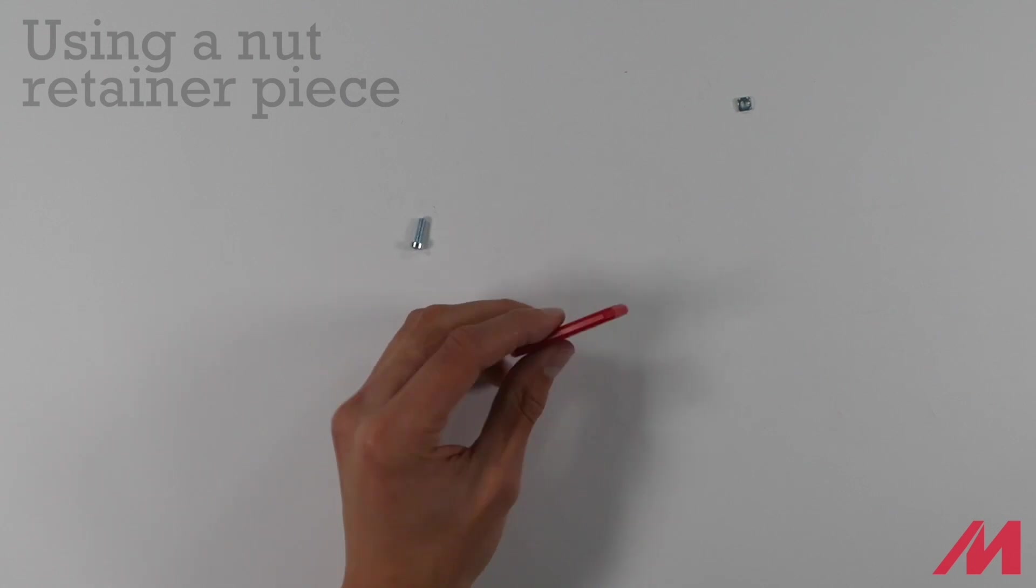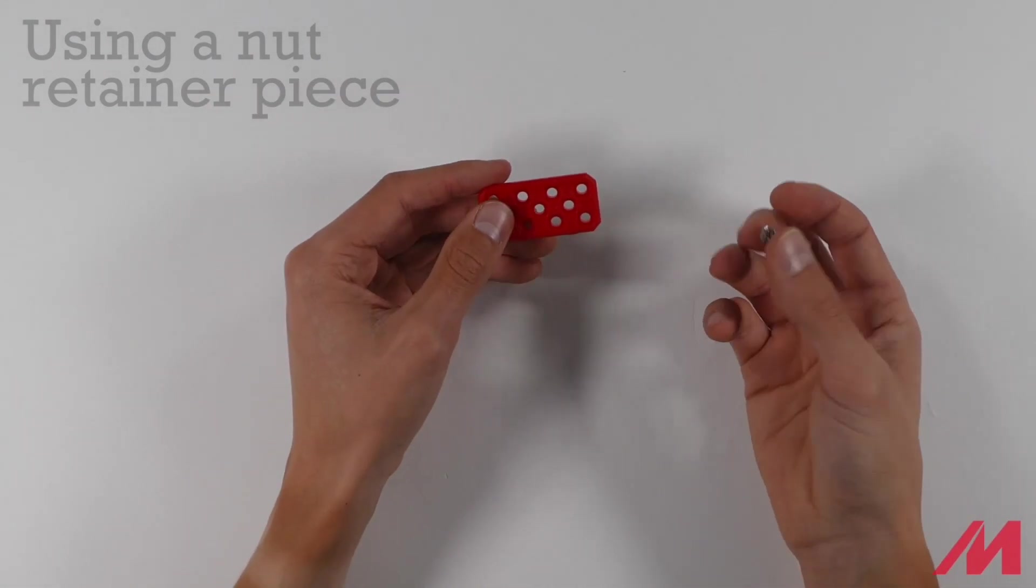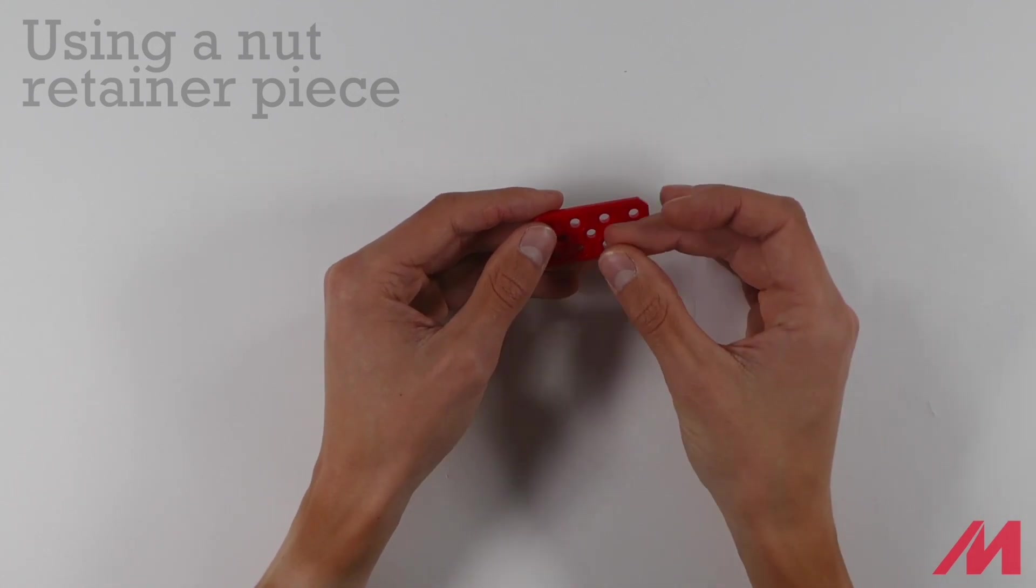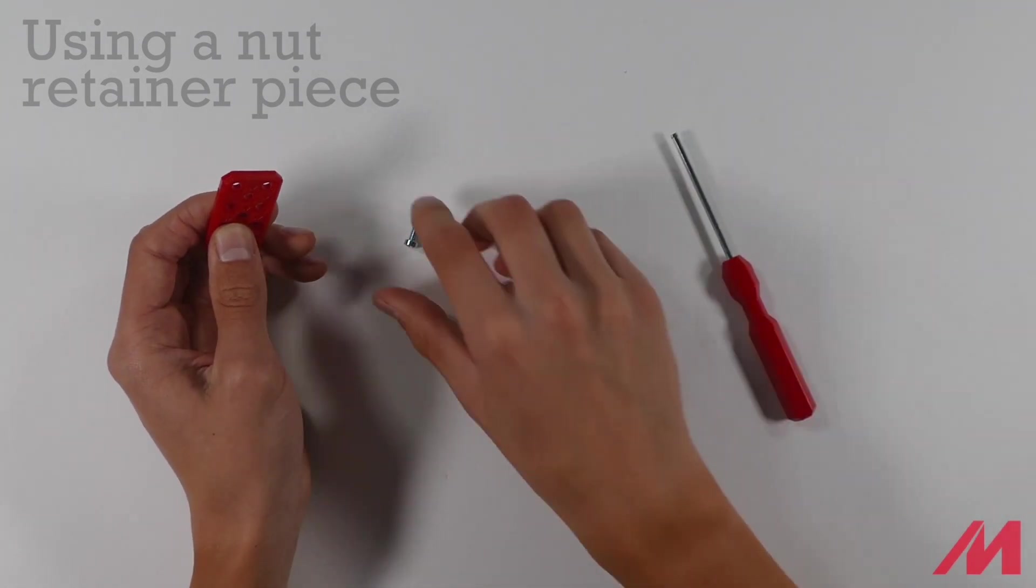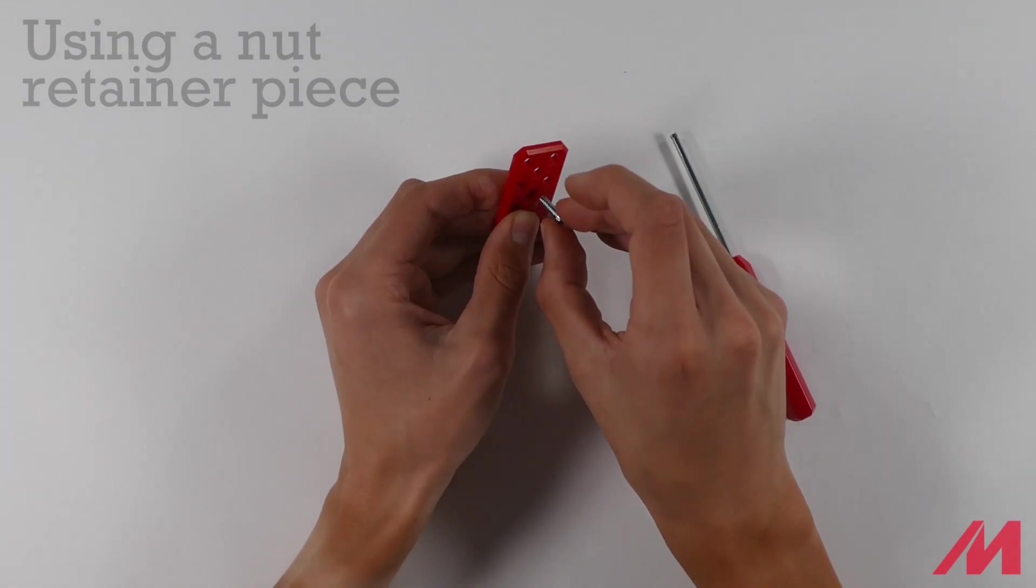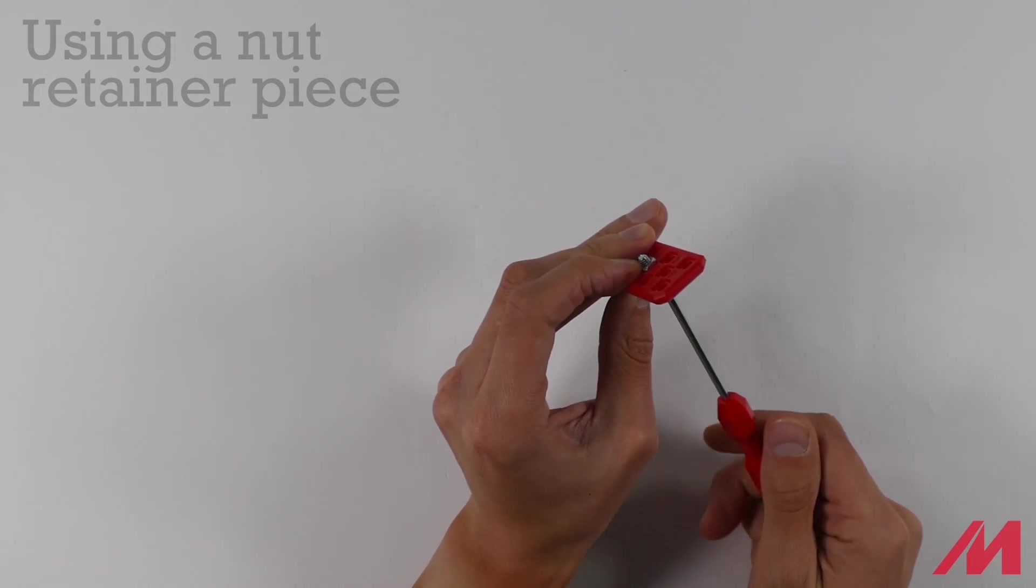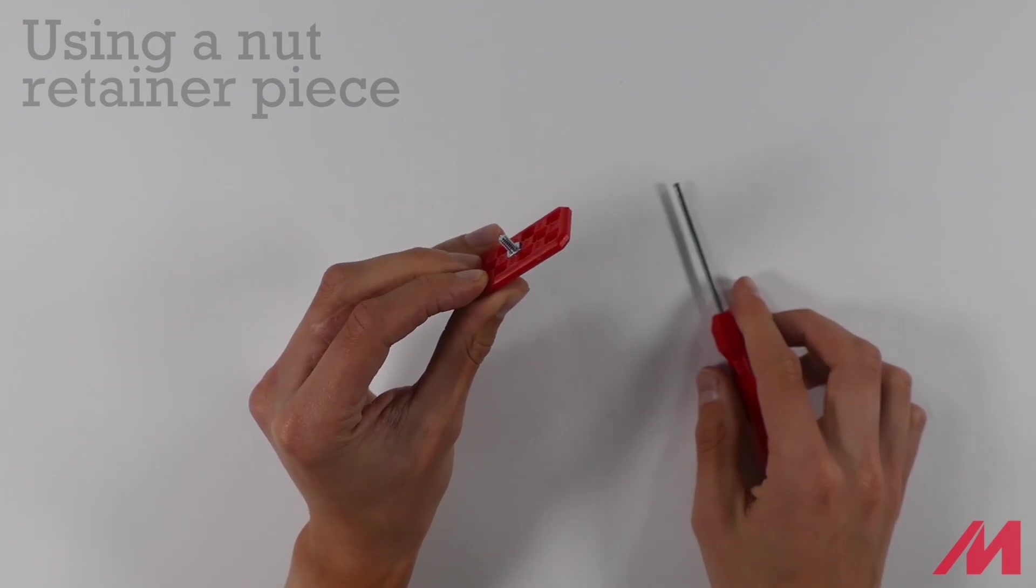When building with Meccano's plastic pieces, you don't always need a spanner because these clever pieces have nut retainers on them. Fit a nut into the grooves on the piece. All you need is your hex key and your screw. Take the screw, start turning to the right. Righty tighty. And the nut retainer piece will hold the nut in place. Cool, right?